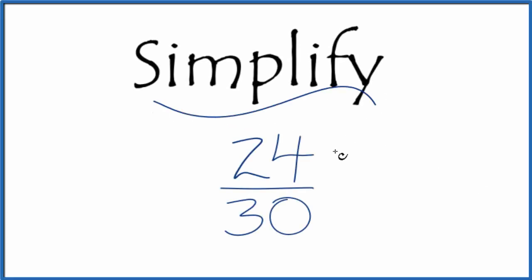Let's simplify the fraction 24 over 30. Here's how we do it. We're looking for a factor that goes into both 24 and 30. You could just start by 2, both of these are even.